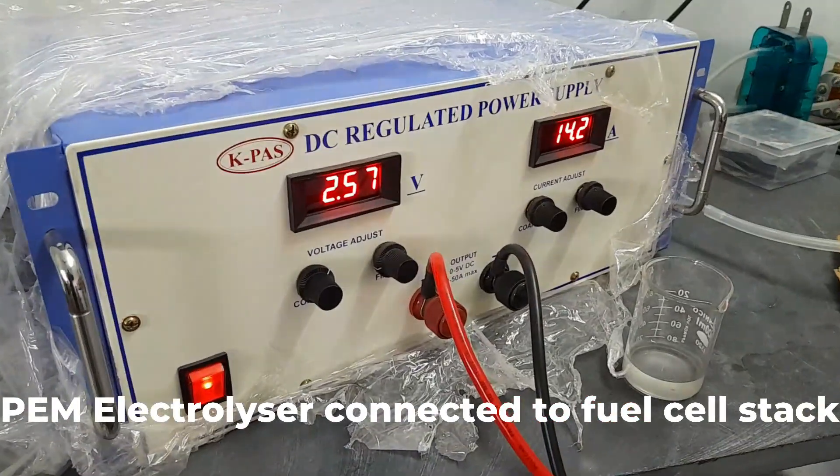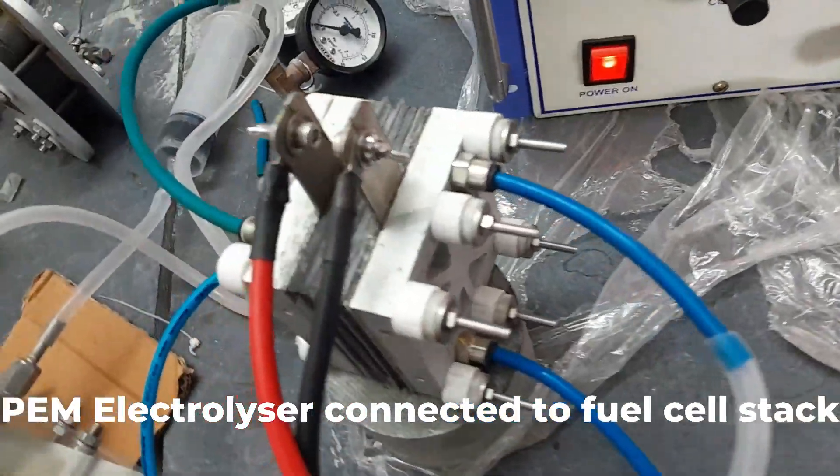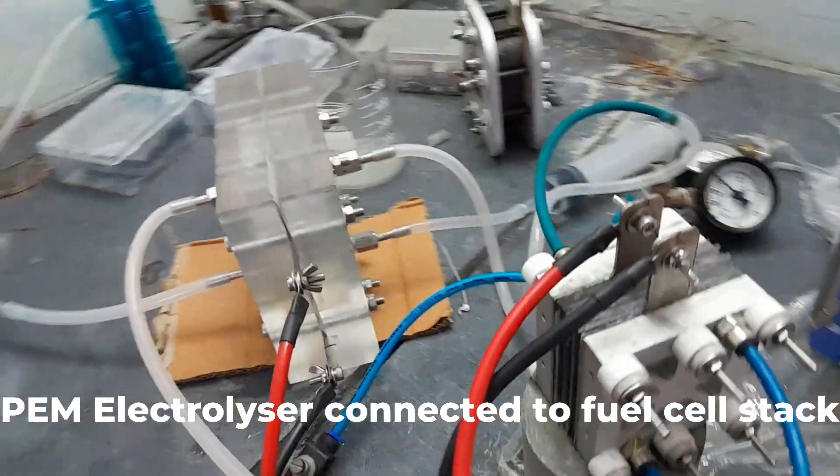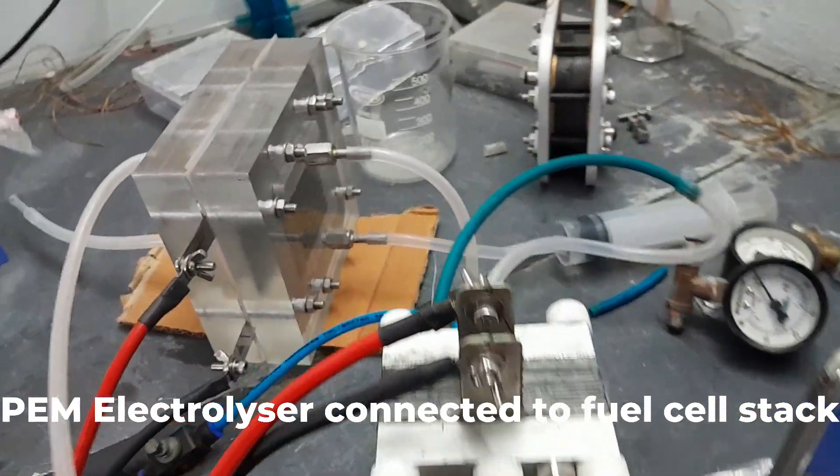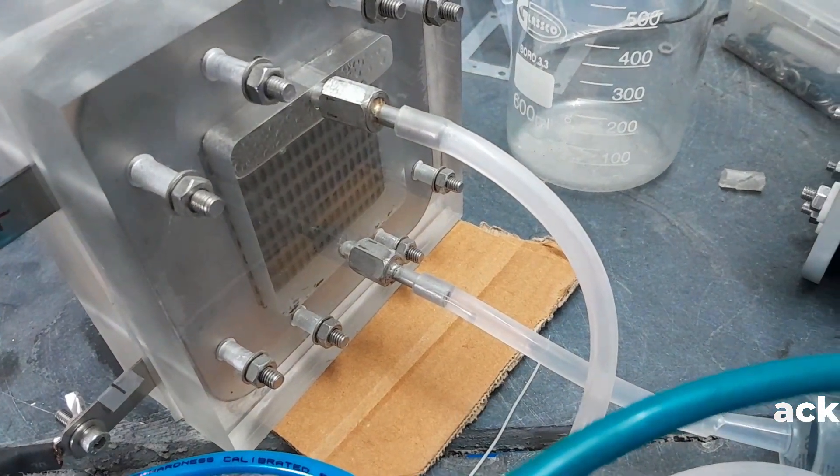There you can see the hydrogen and oxygen evolution like before and you can see the power supply to the electrolyzer and we connected a small three cell fuel cell stack. We are feeding the fuel from the electrolyzer hydrogen and oxygen to the short stack.